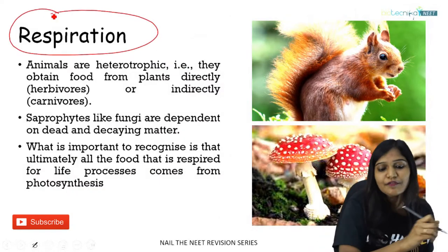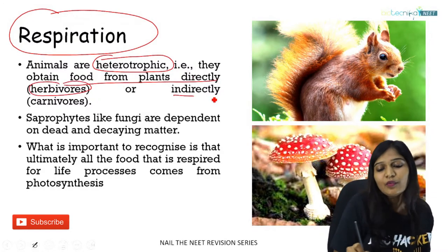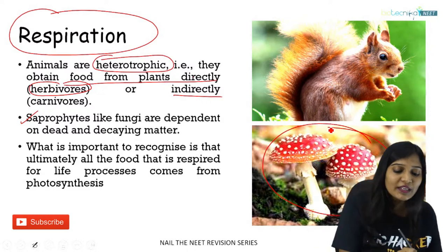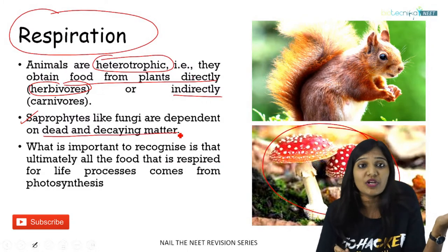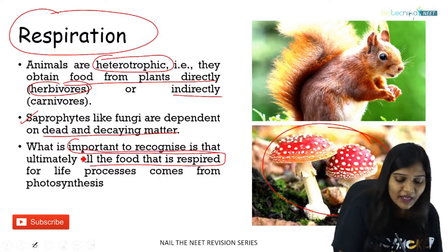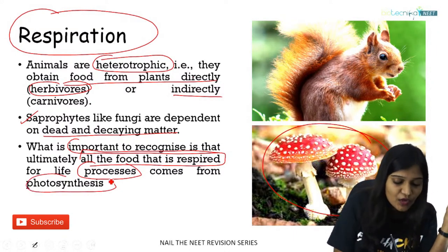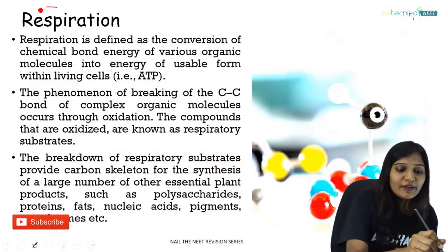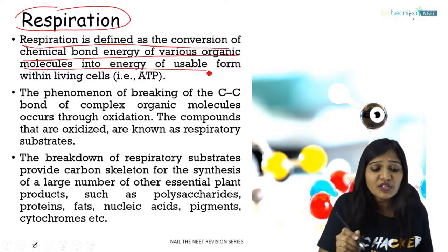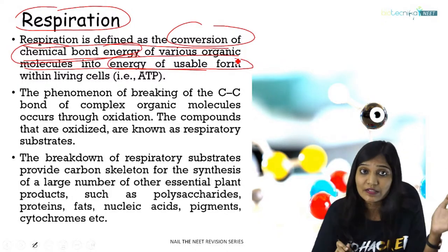Animals are heterotrophs — herbivores obtain food directly from plants, carnivores rely on animals that feed on plants, and saprophytes like fungi rely on dead and decaying matter, which ultimately comes from plants. So all the food that is respired for life processes usually comes from photosynthesis. Without plants, nobody can have food.